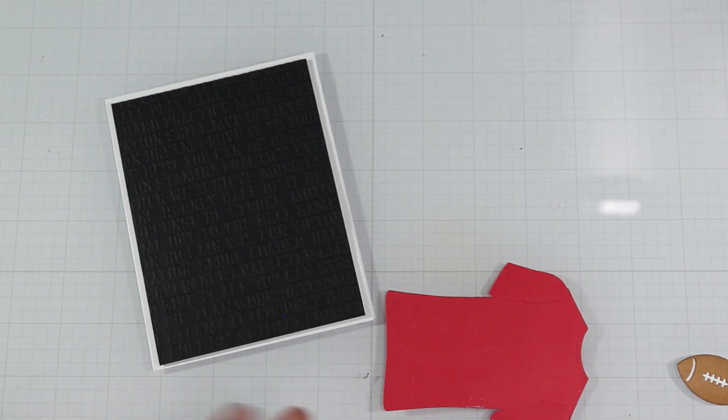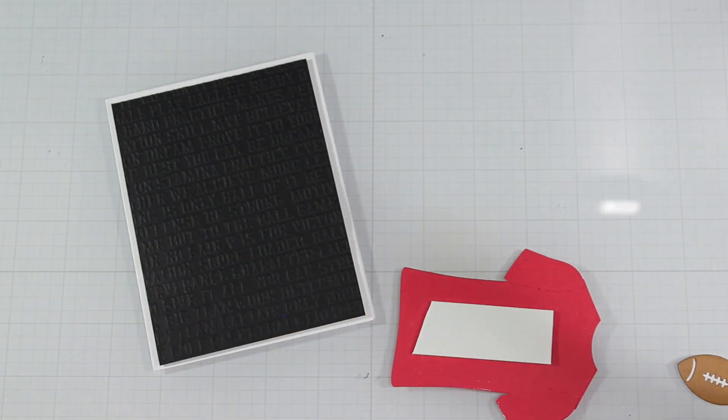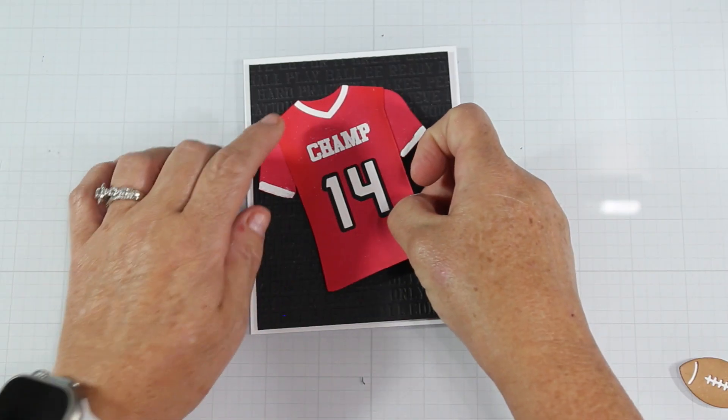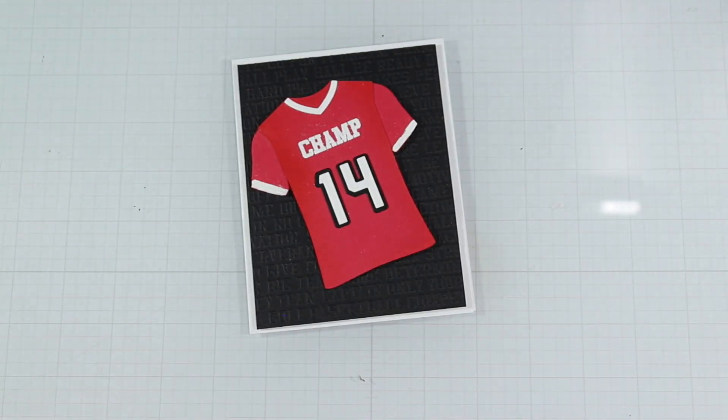I use the same leftover foam tape to add dimension to my jersey and pop that up onto the panel. Again, you could omit this, but I'm a texture and feel kind of person, so I always pop my stuff up. But I know some people don't care for that.